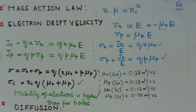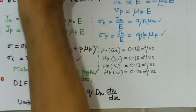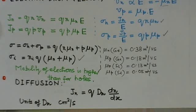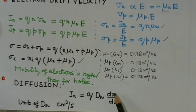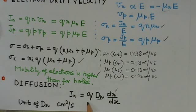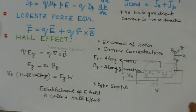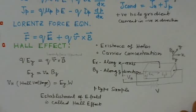Another mechanism is diffusion, which comes into effect because of the concentration gradient. Movement of carriers from high concentration to low concentration is called diffusion. It depends on the gradient of concentration and the diffusion constant D, and q is the charge of the carrier. The resulting diffusion current can then be determined.